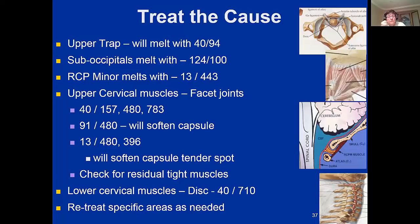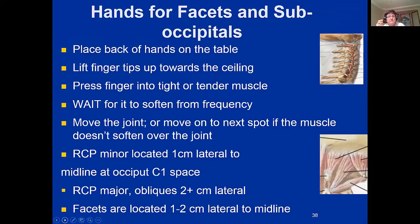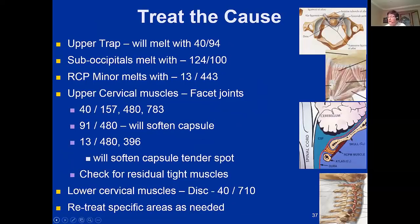To get the cerebellum to let the muscles relax on a permanent basis, you have to treat the adhesions in the nerve between the nerve and the capsule — gently move the muscles and peel those nerves off the posterior capsules. Usually what you'll find next are the lower discs. Inflammation in the disc annulus is 710. Retreat specific areas as needed. For the facet joints and suboccipitals, place backs of hands on the table, lift fingertips up toward the ceiling, and wait for it to soften.